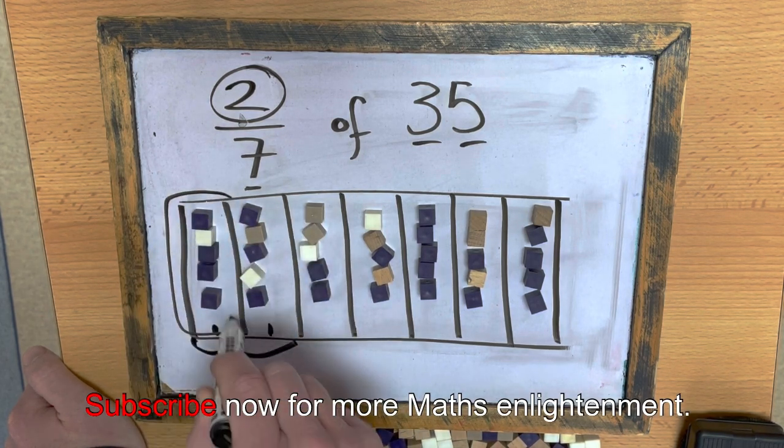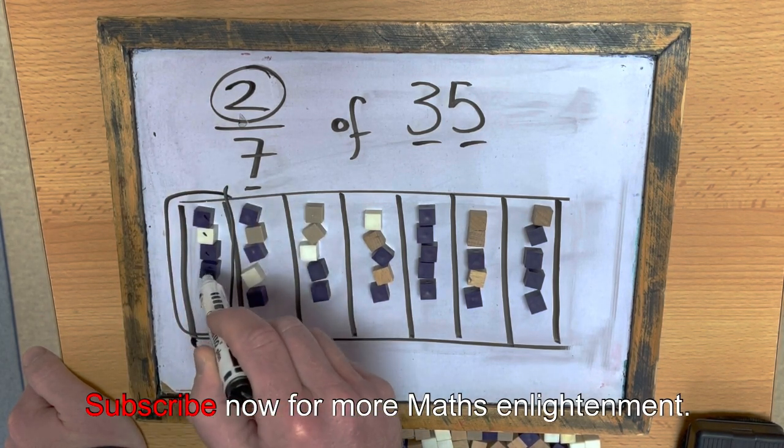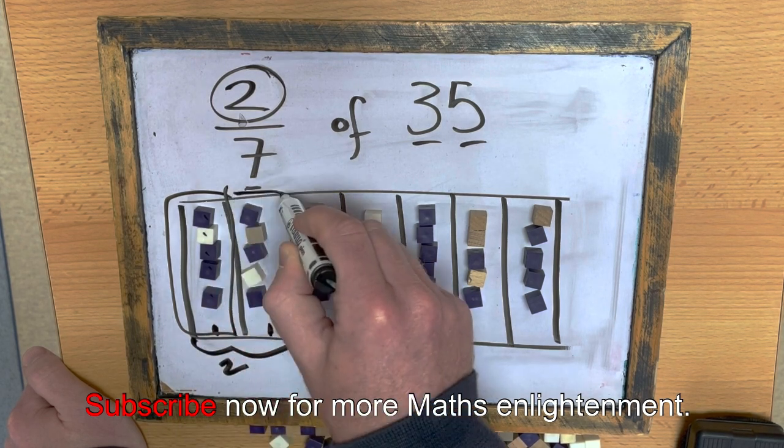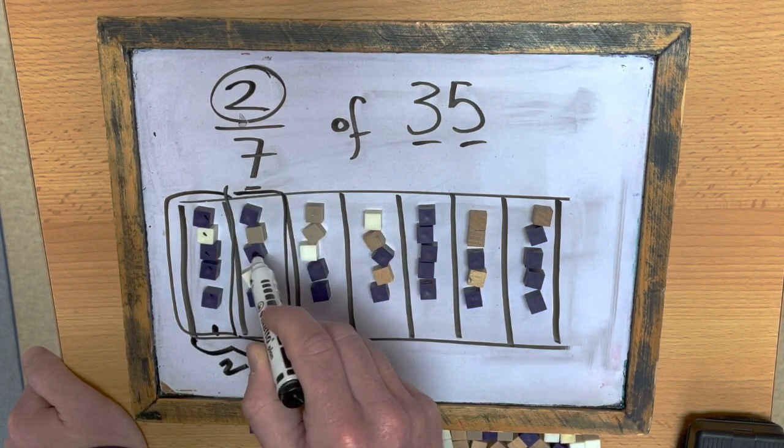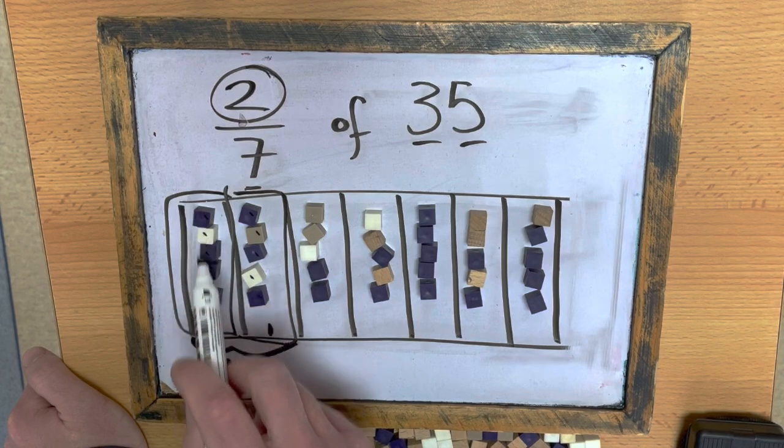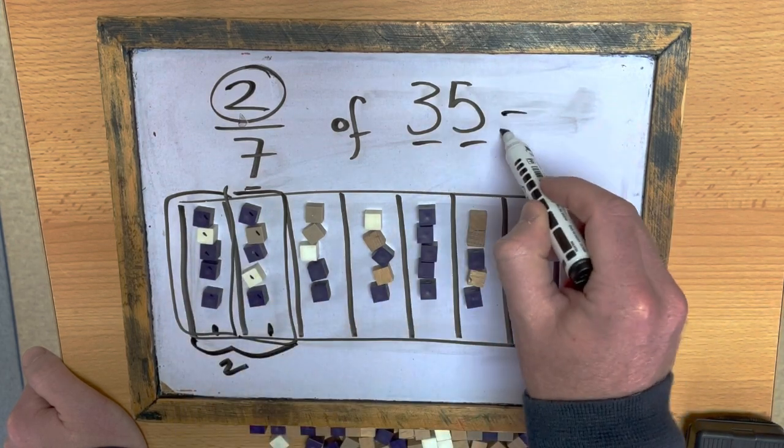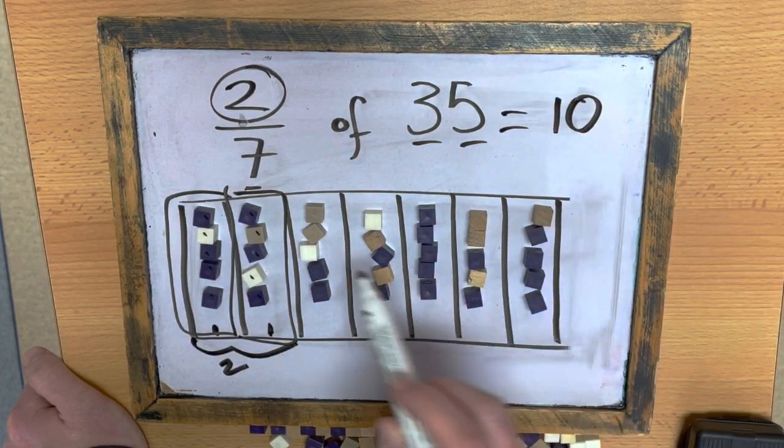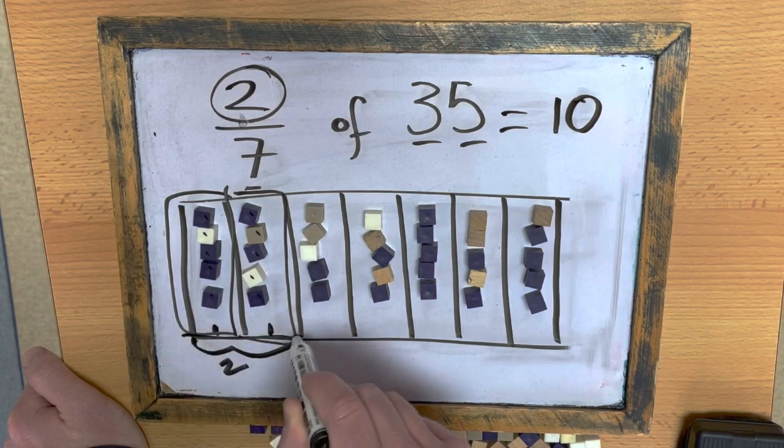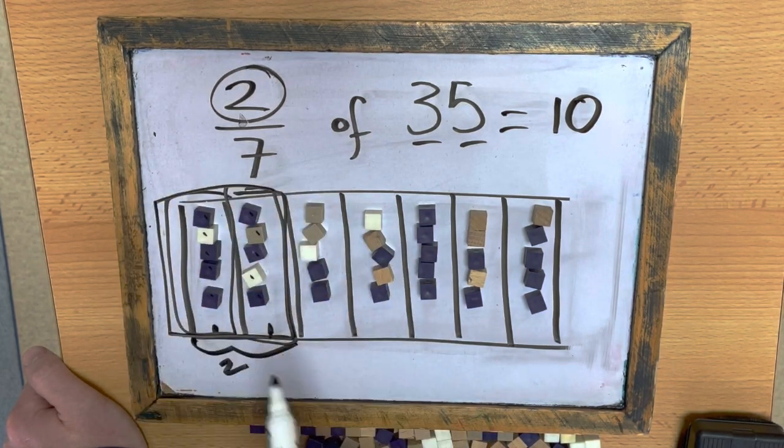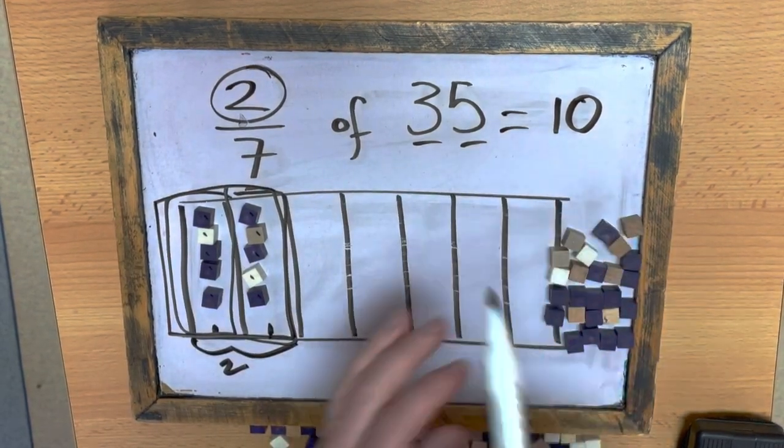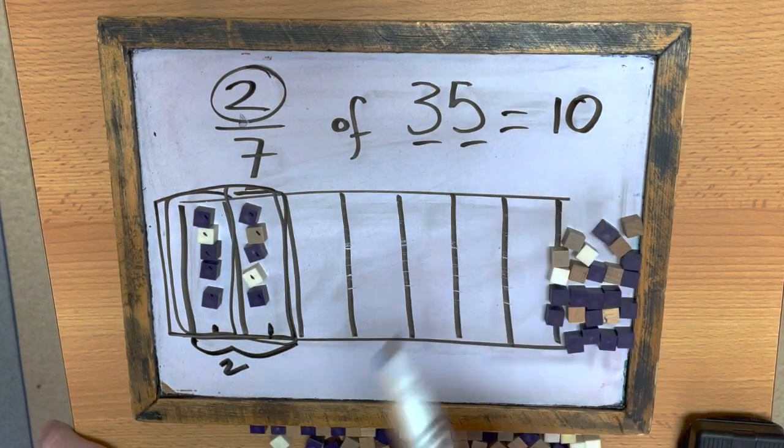So, in this box, I have 1, 2, 3, 4, 5. So, 5 add 5 is 10 and two-sevenths of 35 is 10.